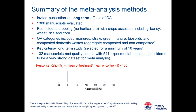A key criterion was that studies had to be running for a minimum of 10 years — we weren't interested in one-off field trials. Overall, 132 manuscripts met the quality criteria, using controls and standard errors within their data sets. They were able to extract 541 experimental data sets, which in meta-analysis terms is considered an exceptionally strong and reliable data set.